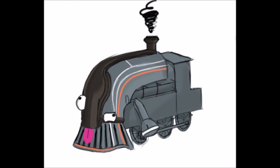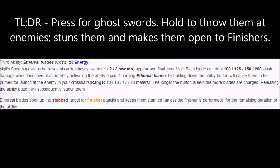Vigil's third ability is Ethereal Blades. Upon activation, Vigil has 3 ghost-like swords follow him, which will remain until used. Vigil can hold down the 3 key to charge the Ethereal Blades, and then release to fire the blades towards the cursor. Each blade deals 200 slash damage, and if a target is struck by a blade, they will be stunned for a few seconds and be open to finisher attacks.